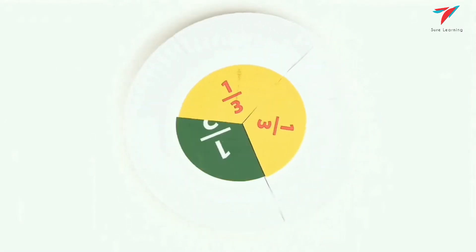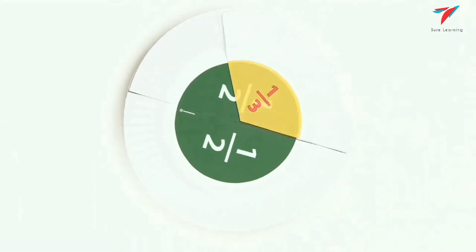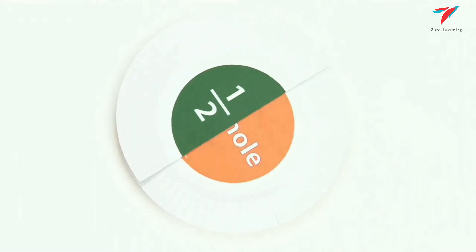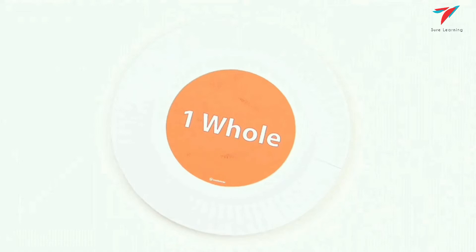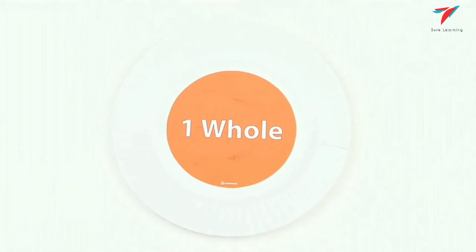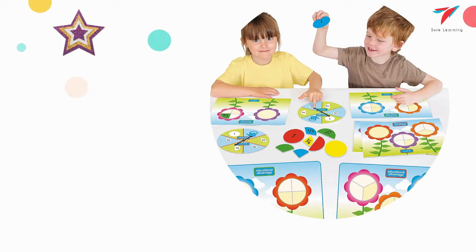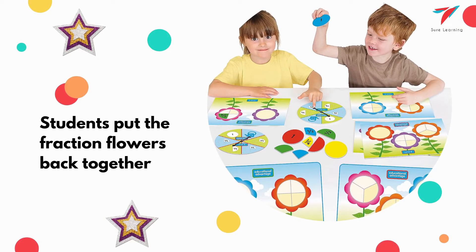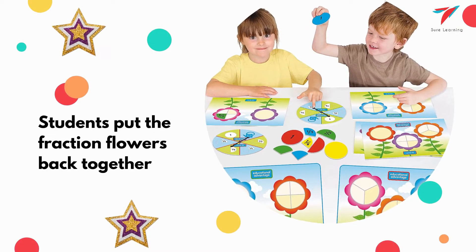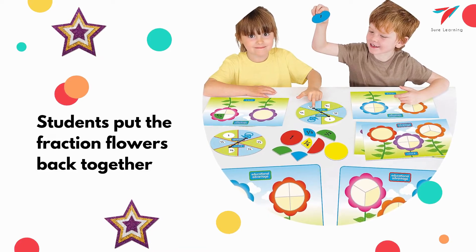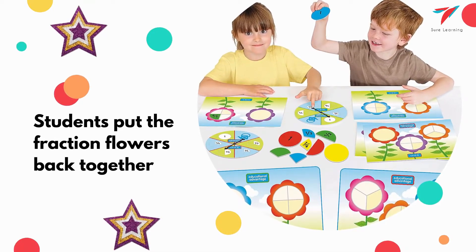For fraction flowers, you need paper plates and paint to create fraction wheels. Start the first wheel with the whole number one, and then keep dividing the plates into 1/2, 1/3, 1/4, and so on. The game is to mix all the fractions up and have the students put the fraction flowers back together.